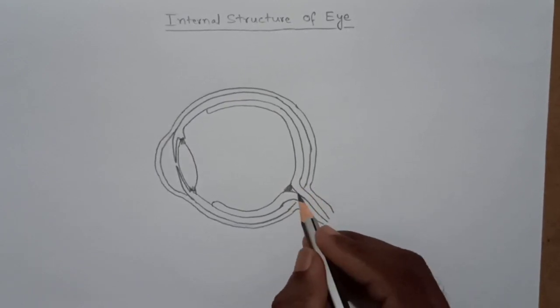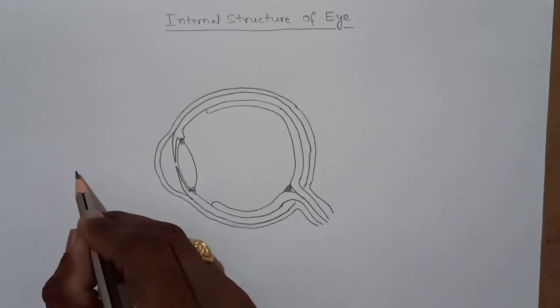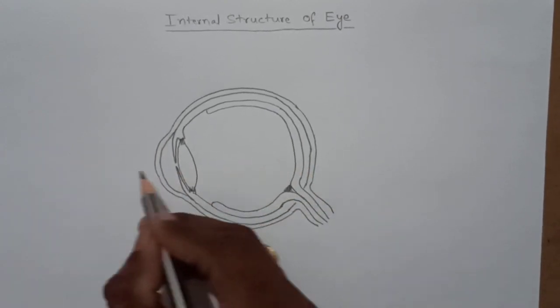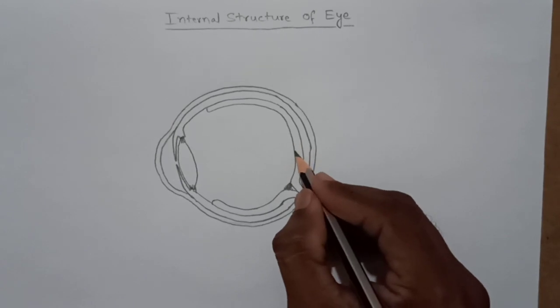This particular area is called as blind spot. And where the light allows more frequency, there we can observe more number of rods and cones in that particular area. It is called as fovea.